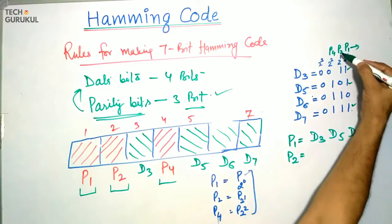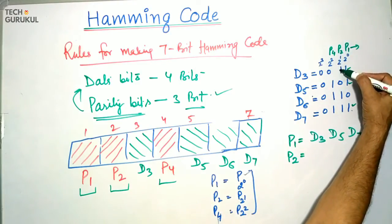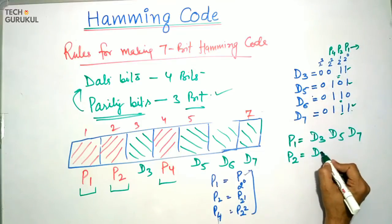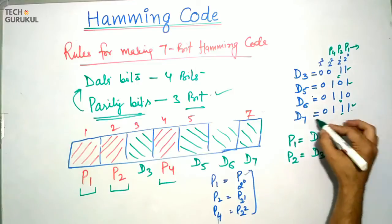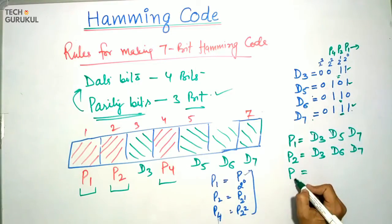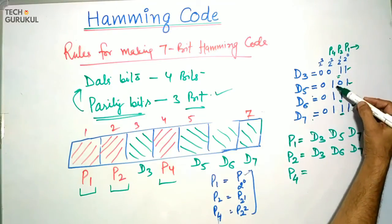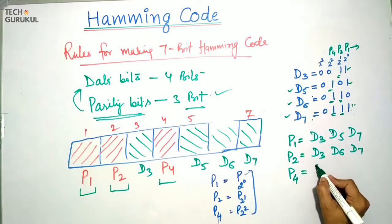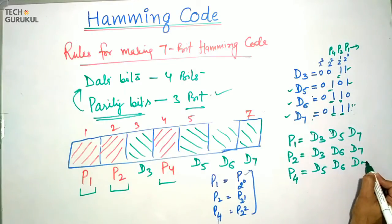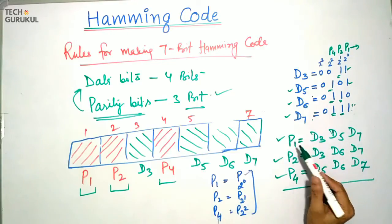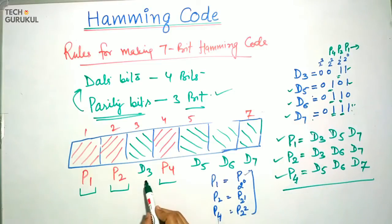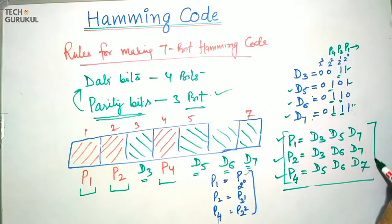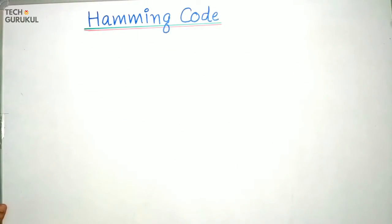P2 is calculated from the 2^1 position value. The bits related to P2 are D3, D6, and D7. For P4, looking at the 2^2 position, the related bits are D5, D6, and D7. In this way we can generate the parity bits P1, P2, and P4. The data stream D3, D5, D6, D7 is known, and the parity bit values are the unknowns we calculate from these data bits.